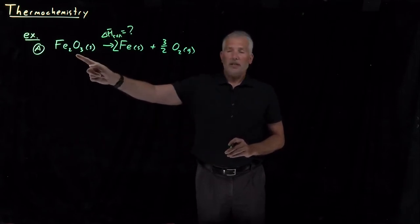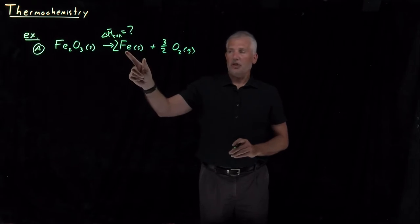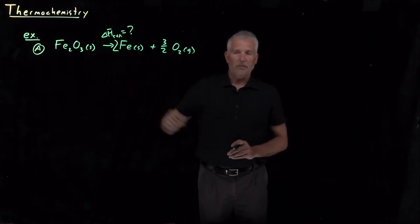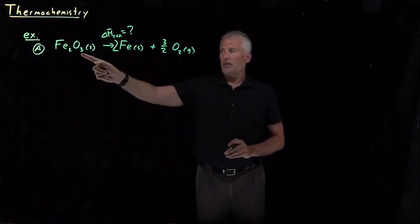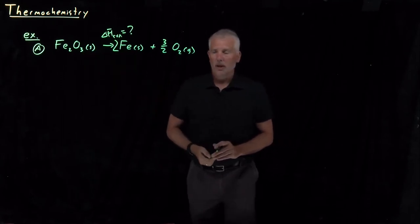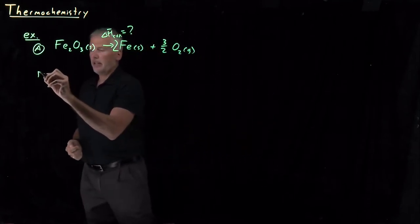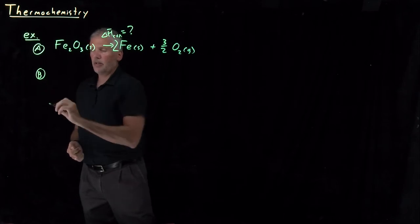Iron 3 oxide, that's essentially rust. Spontaneously, iron and oxygen will combine and form Fe2O3, but it's more difficult to make it go the other way around. But what that suggests is we can, if I just call this reaction B.